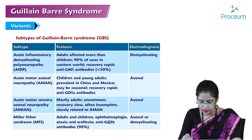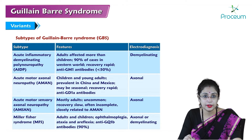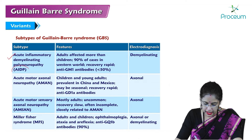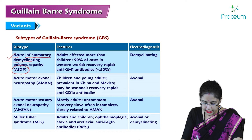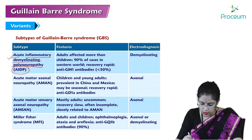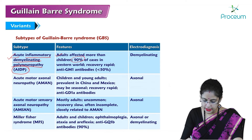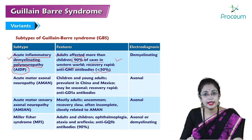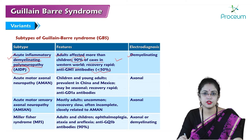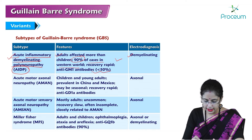Variants — Guillain-Barré syndrome has some variants or subtypes. The first subtype is AIDP, which stands for Acute Inflammatory Demyelinating Polyneuropathy. Adults are affected more than children. 90% of cases occur in the western world. Recovery is rapid. Anti-GM1 antibody is present in less than 50% of cases. Electrodiagnostically, there are demyelinating features — that is why it is named Demyelinating Polyneuropathy.